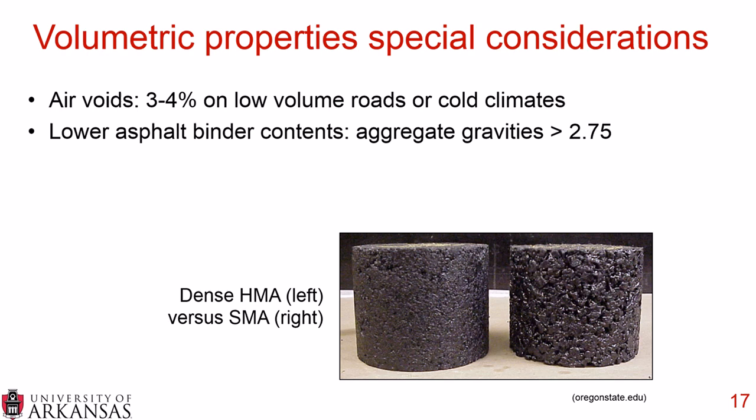Regarding special considerations: air voids can be a little lower — 3% to 4% — on low volume roads or in cold climates. Also, if your aggregate specific gravities are greater than 2.75, you can lower the asphalt binder content a little bit. Details are within the specifications.